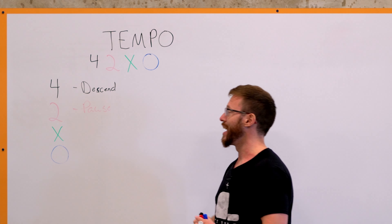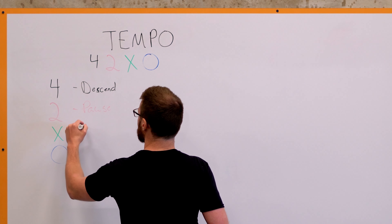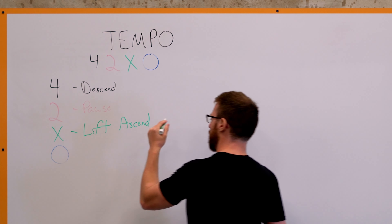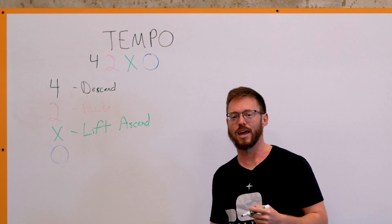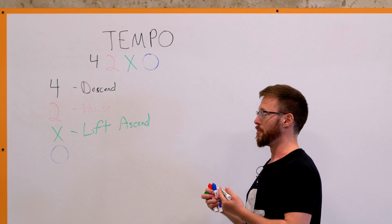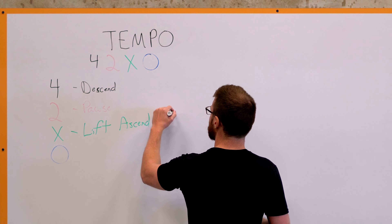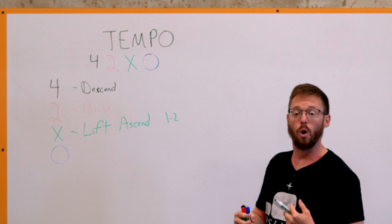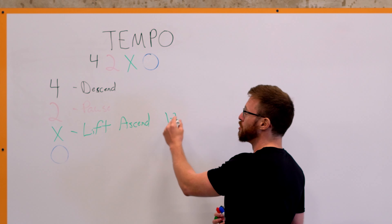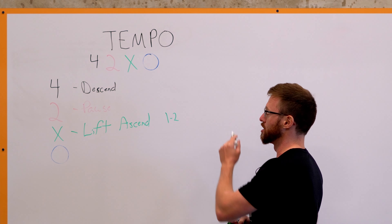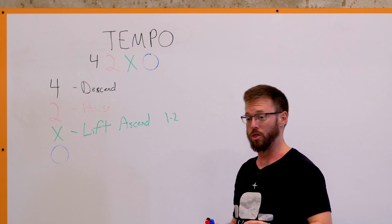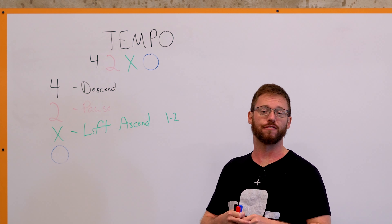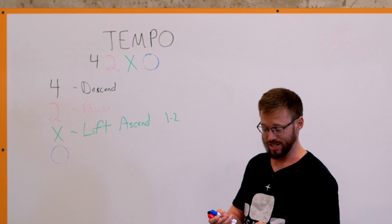The third number — the X — is how quickly you lift, meaning how quickly you ascend on the repetition. In this example you're going as fast as you can. For most primary big lifts that's about 1 to 2 seconds to get to the top. For accessory lifts like a hack squat or intentionally slow lifts, there's no hard rule on how long the concentric can take. For example, you could do hack squats going 5 seconds down, no pause, 5 seconds up.